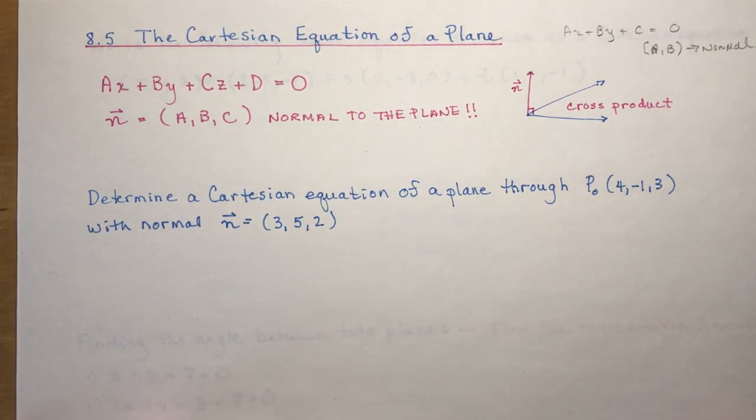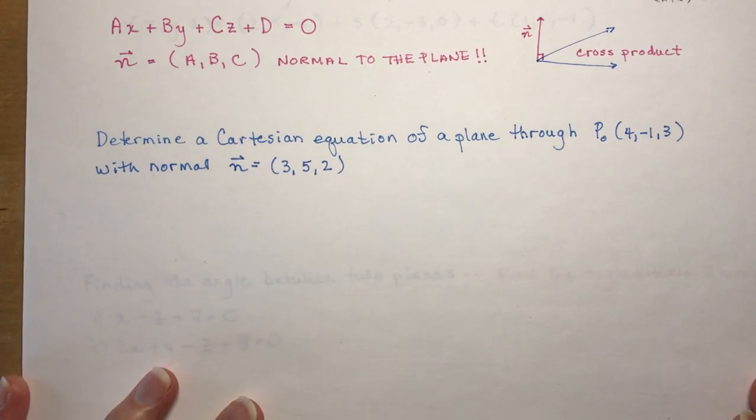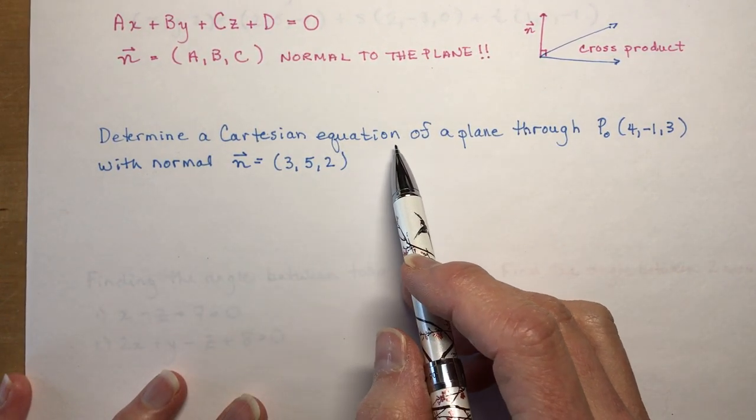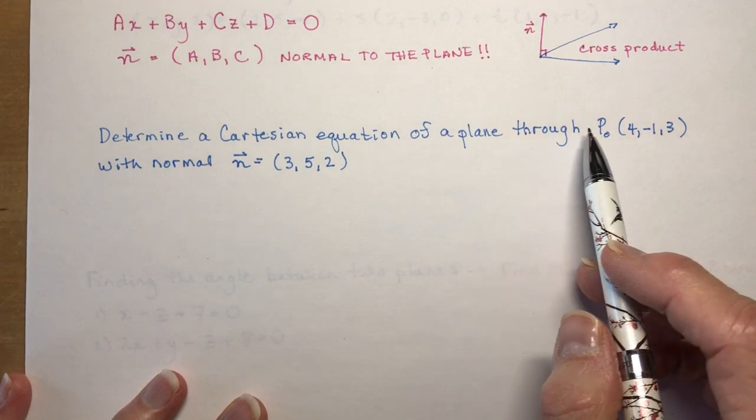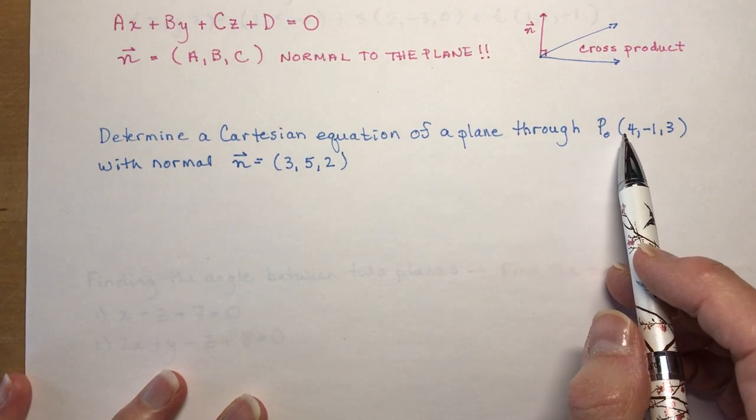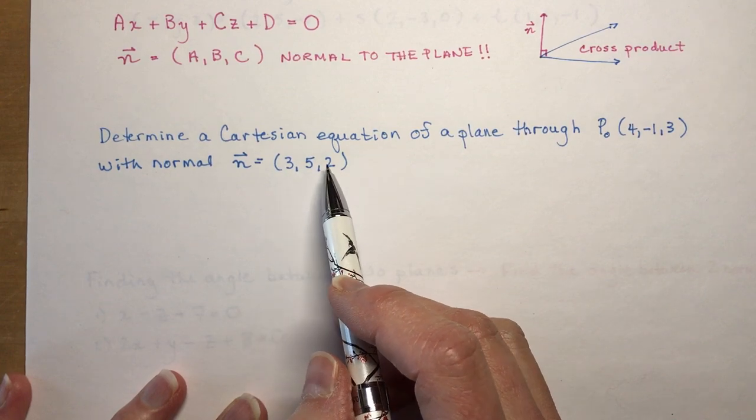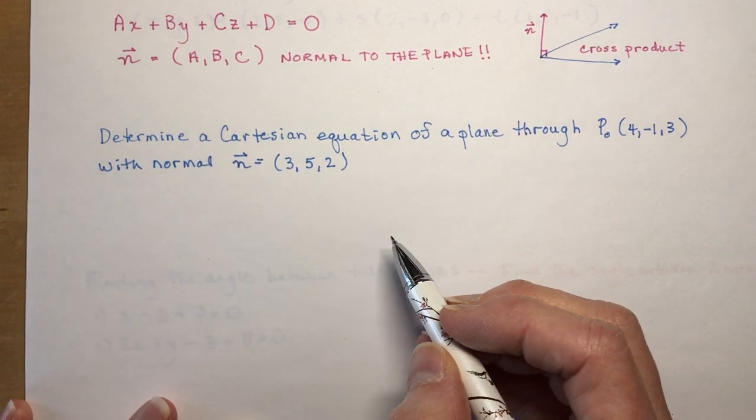So let's do a couple of examples to help you solidify this little equation. The first says determine a Cartesian equation of a plane through the point 4, minus 1, 3, with a normal of 3, 5, and 2. So it's very easy to do.